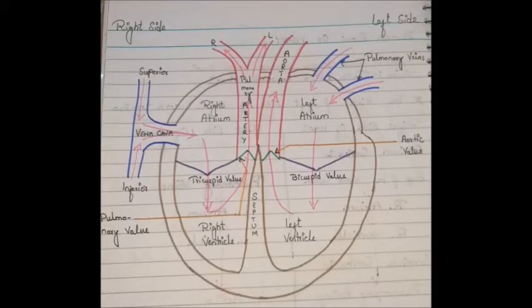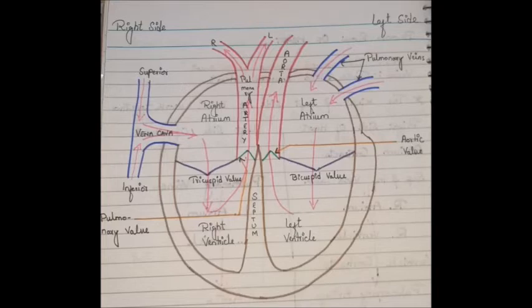In review: the heart contains four chambers — two upper chambers, the right atrium and left atrium, and two lower chambers, the right ventricle and left ventricle. The heart contains four valves: tricuspid, bicuspid, aortic, and pulmonary. The right side of the heart contains deoxygenated blood, while the left side carries oxygenated blood. Deoxygenated blood from the superior and inferior vena cava moves into the right atrium, then into the right ventricle through the tricuspid valve.